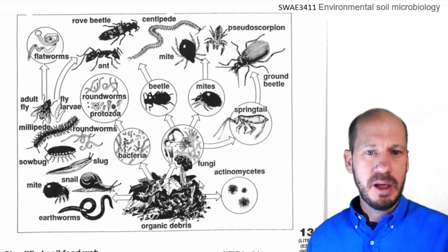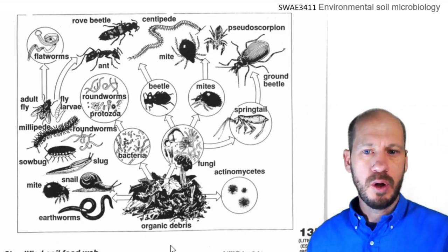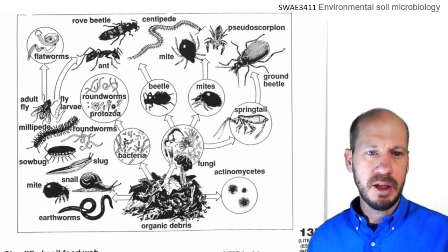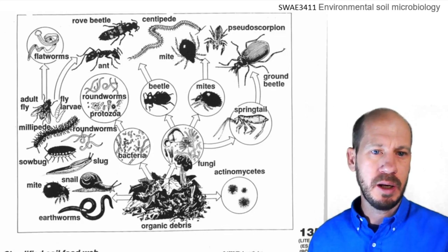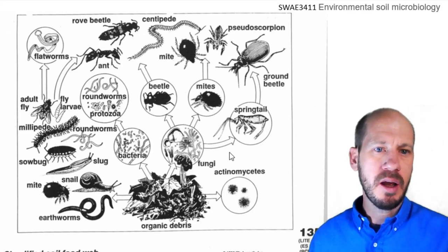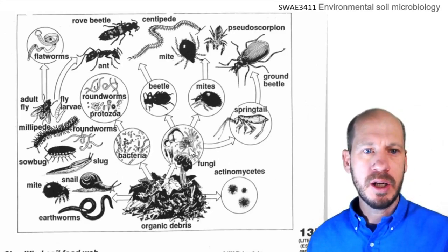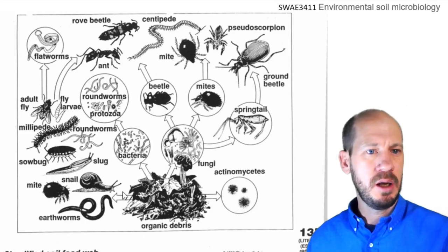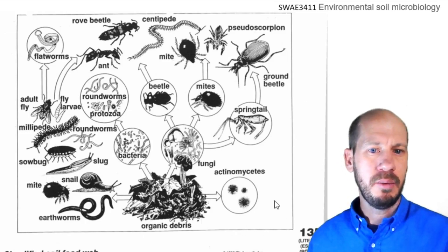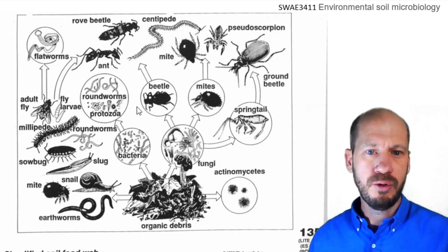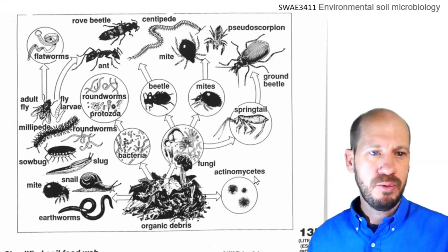Another representation of the soil food web shows the organic debris being decomposed directly by fungi, bacteria and actinomycetes, and then all the other organisms feeding on this microflora and serving as food for the next layer in the food web.